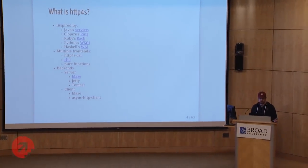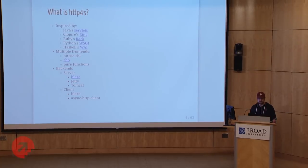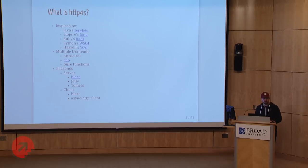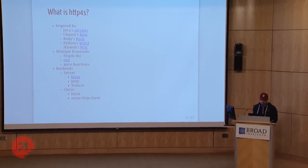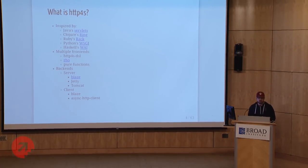In Clojure, you've got Ring. In Ruby, you've got Rack. Python has WSGI. Our closest cousin is Haskell, which has WAI. There was nothing like that in Scala, so we set out to build that. As far as that initial goal went, we failed kind of miserably — today Scalatra does not run on HTTP4S and we don't have a Netty backend for HTTP4S.